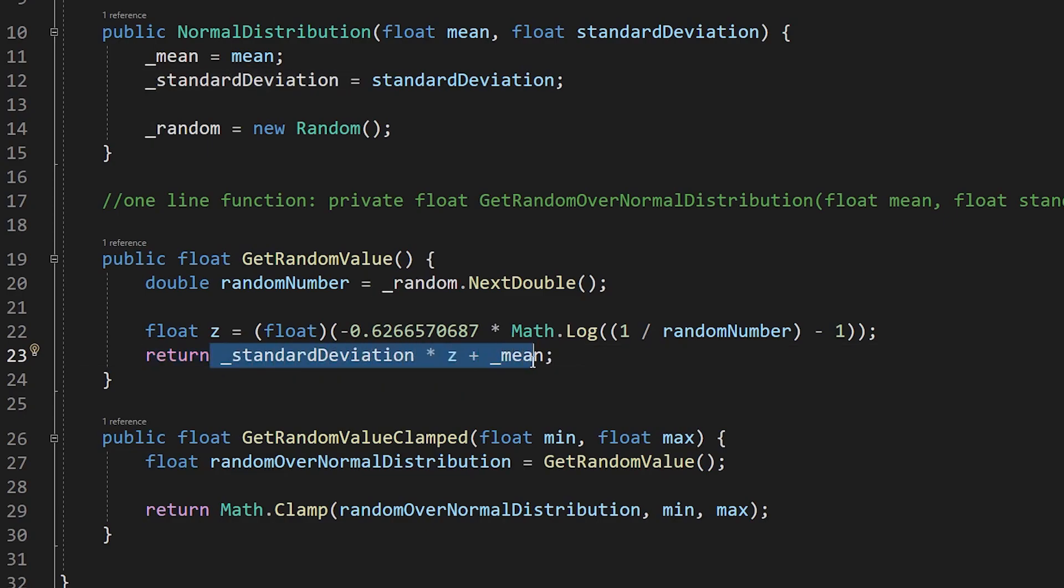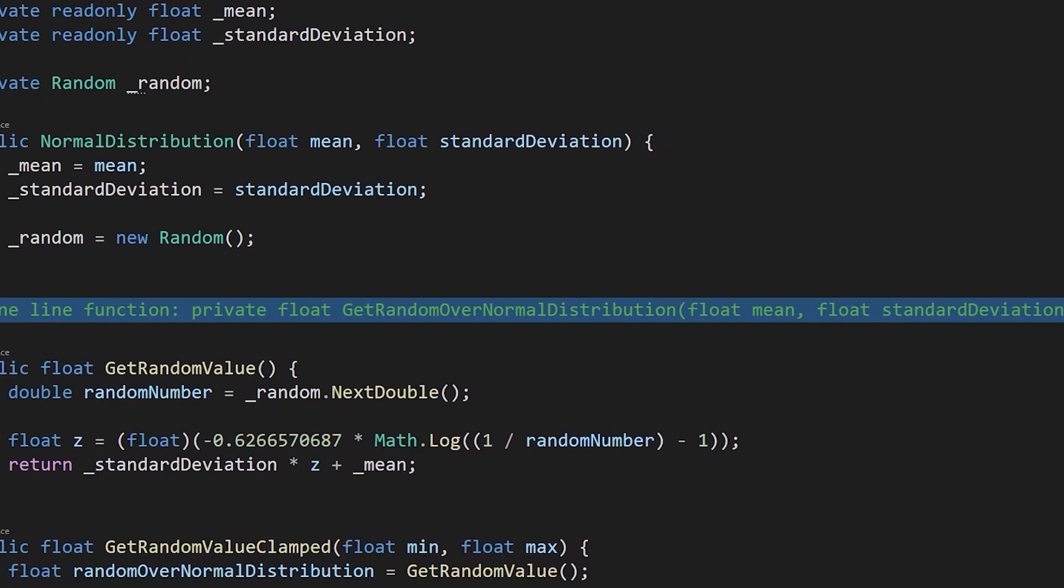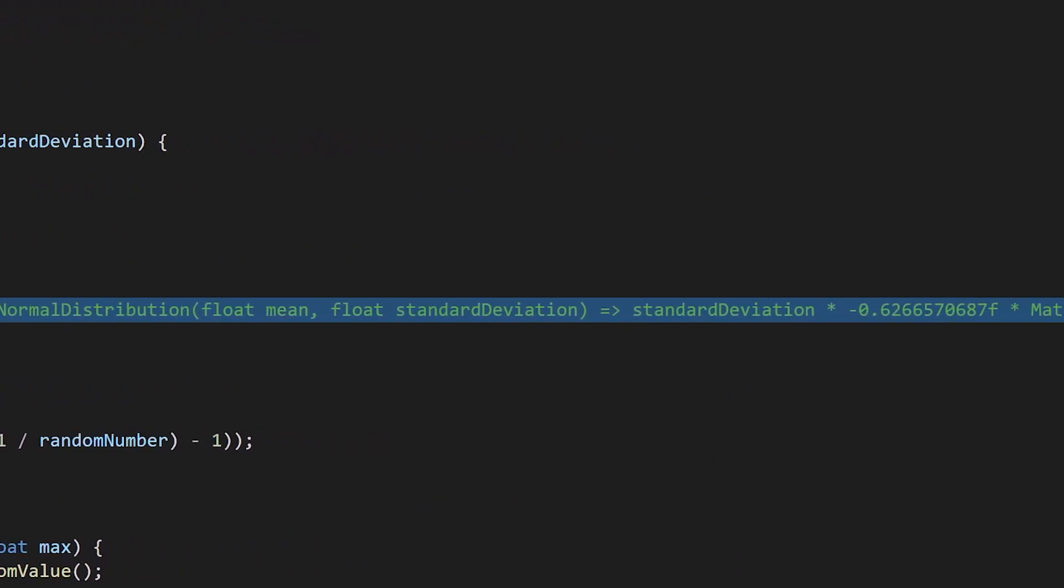Finally, we multiply our z-score by the standard deviation and add it to the mean to get the random value on the normal distribution. Our getrandomvalue clamped function simply calls the getrandomvalue function and then clamps it to the parameters. Once you understand what's going on, the code is actually really simple, and the single line from earlier is just the getrandomvalue function smushed into one line of code. Now, it's time for the bonus section.